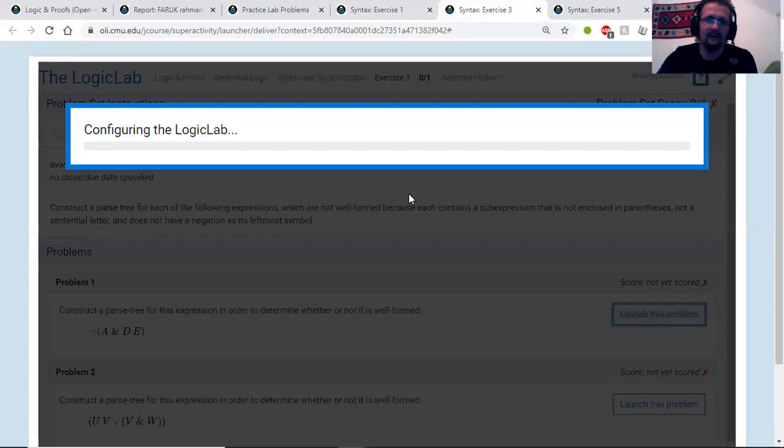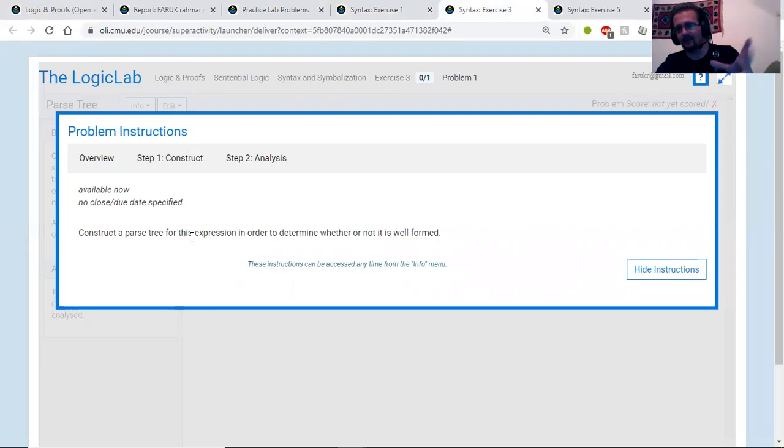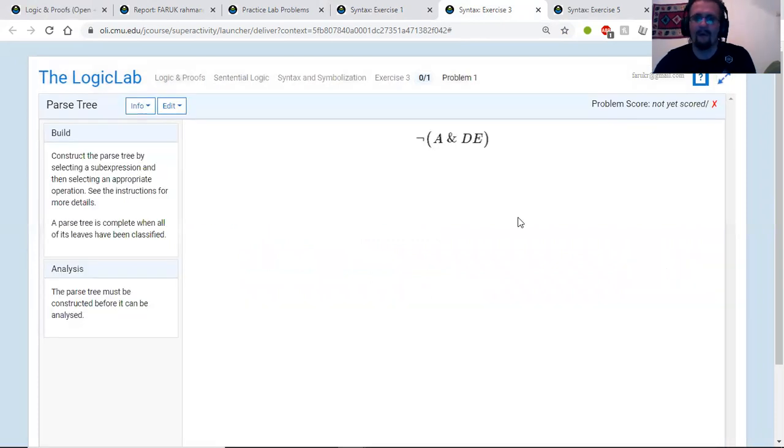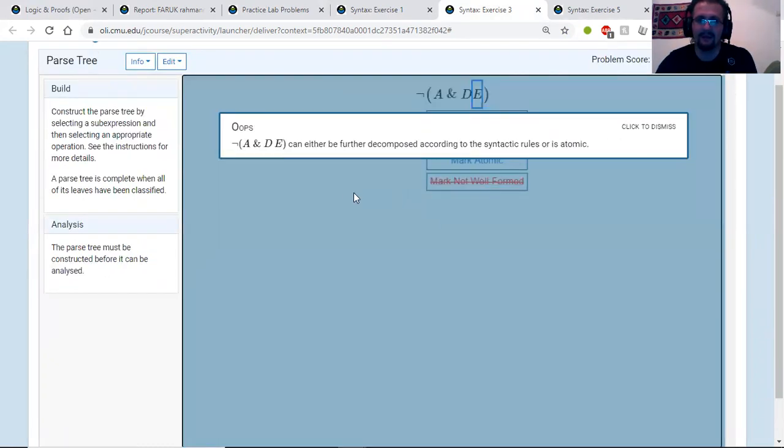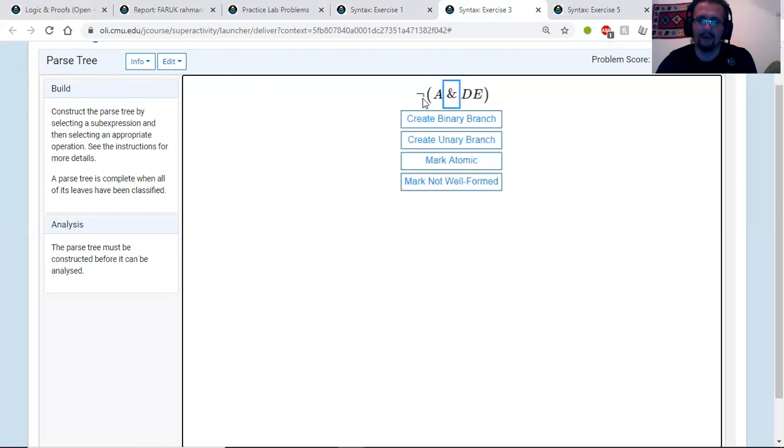Now, let's take a look at exercise three here. Again, we're trying to figure, so first we just write this parse three that tells us what are all the parts. And then we determine whether or not it is well formed. Okay? So our top level, let's see here. This is not, and then in parentheses, A and DE. Now, right here, you know, this isn't well formed. Why not? Well, because this DE doesn't quite work. You would need something in between it, either conjunction, disjunction, or conditional sign. And at that point, you'd actually need some more parentheses. I can click on this. I think I could just tell it. No, they want me to decompose it first. I think that's going to require a unary branch.